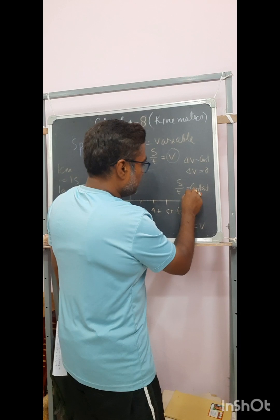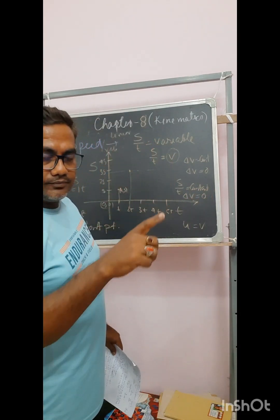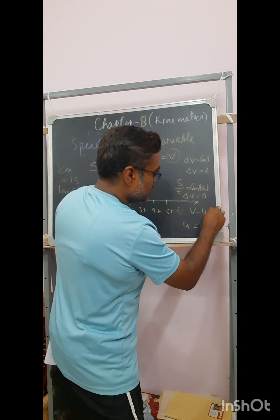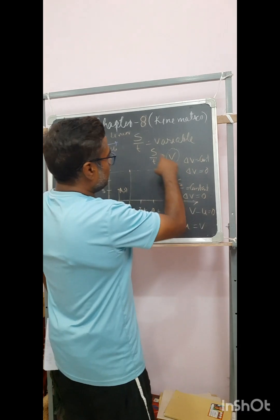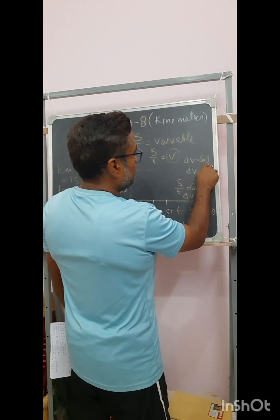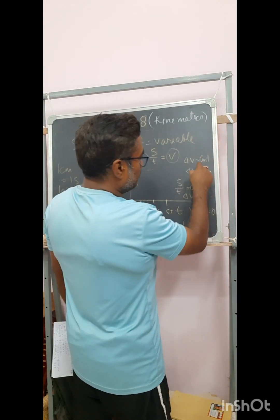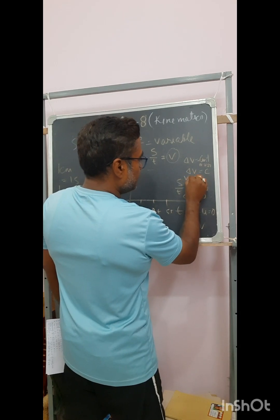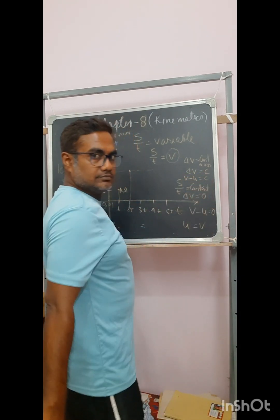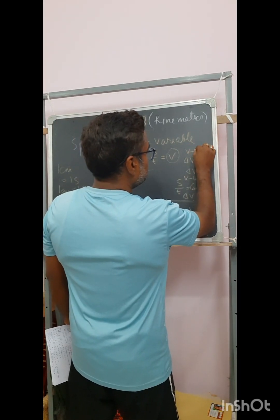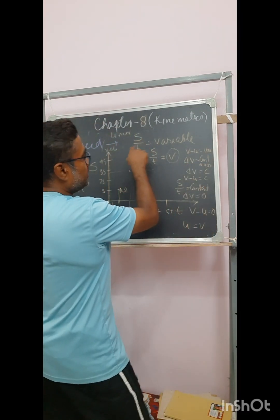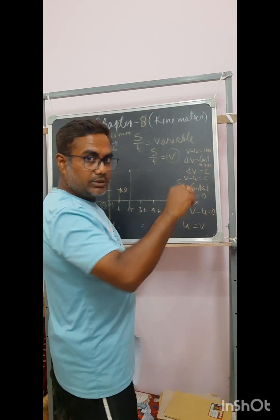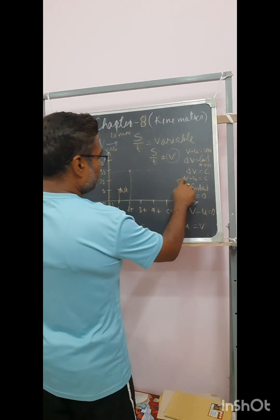If s by t is constant, then delta v = 0, meaning v is not changing. When s by t is variable, delta v may be constant or variable — two conditions may arise. When delta v is constant, it means v minus u follows a constant value. If it is variable, then v minus u is variable — those are the two conditions when s by t is varying.